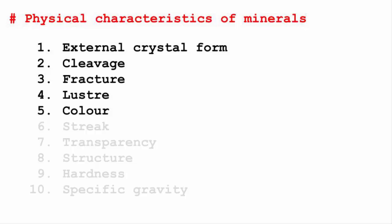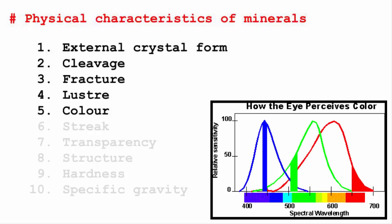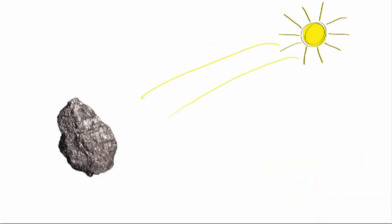Now when light falls upon the crystal of a mineral, some wavelengths are absorbed by the atoms of the crystal while others are reflected. Those wavelengths which are reflected from the mineral surface enter our eyes, and that's how we perceive the color of a mineral.